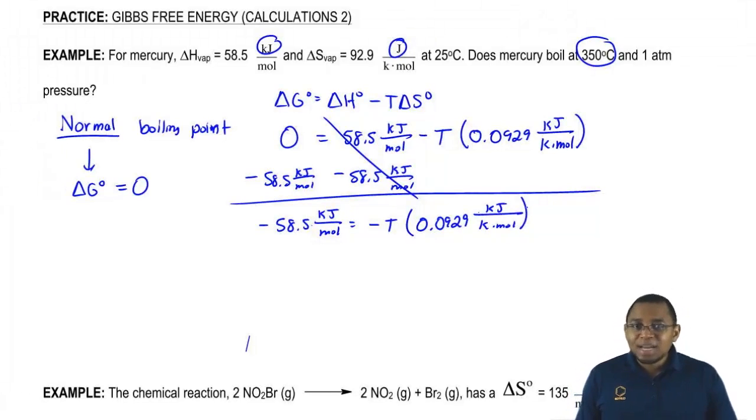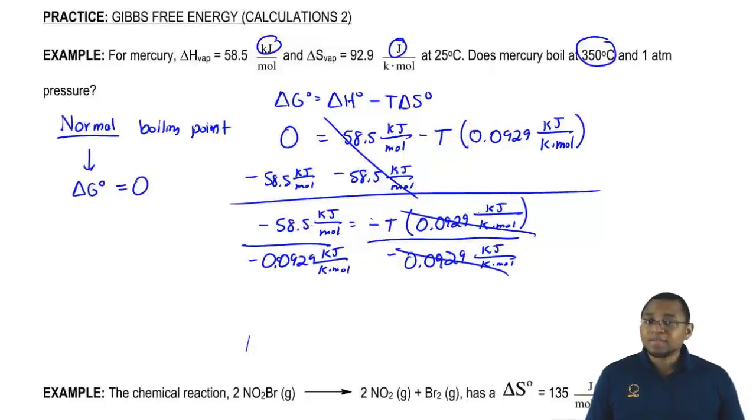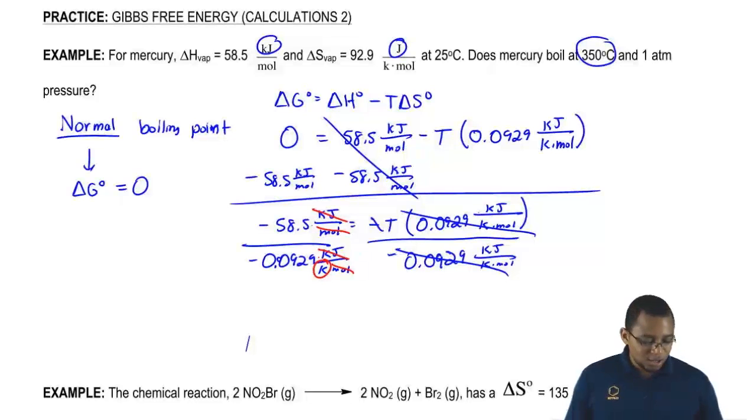We need to isolate our temperature. So we're going to divide out negative 0.0929 kilojoules over K times moles. So when we do that, this cancels out with this, the negative sign cancels out. We're going to say that kilojoules and moles will cancel out with these kilojoules and moles, leaving us with what units left? Kelvin. So temperature here equals 629.7 Kelvin.